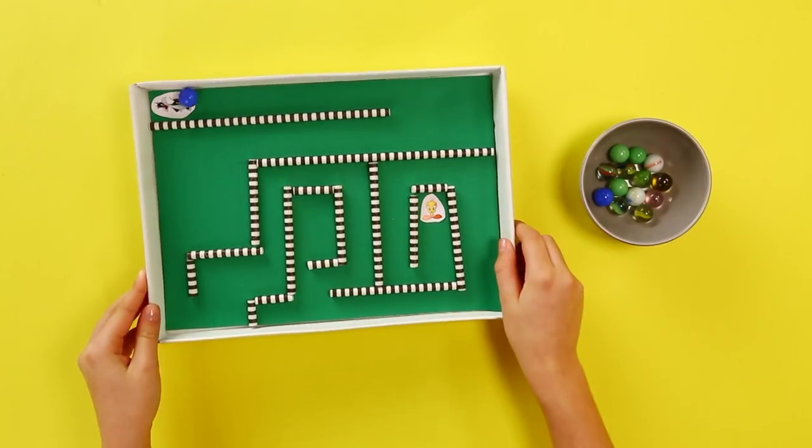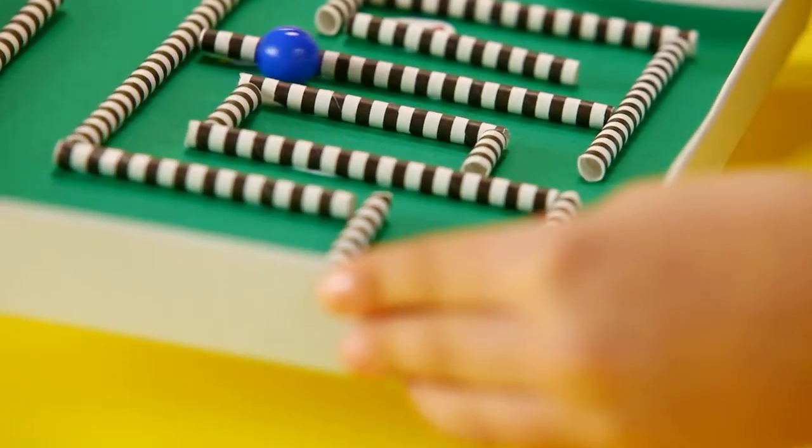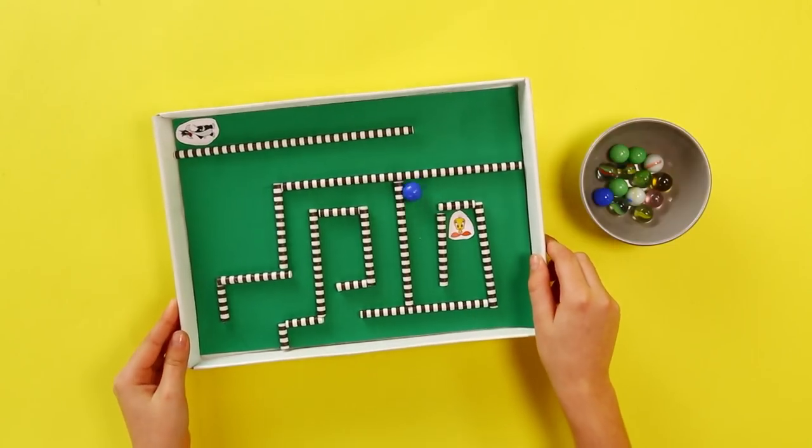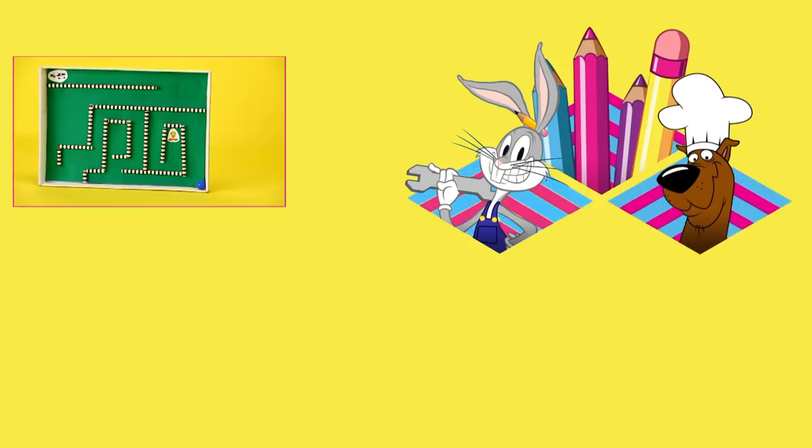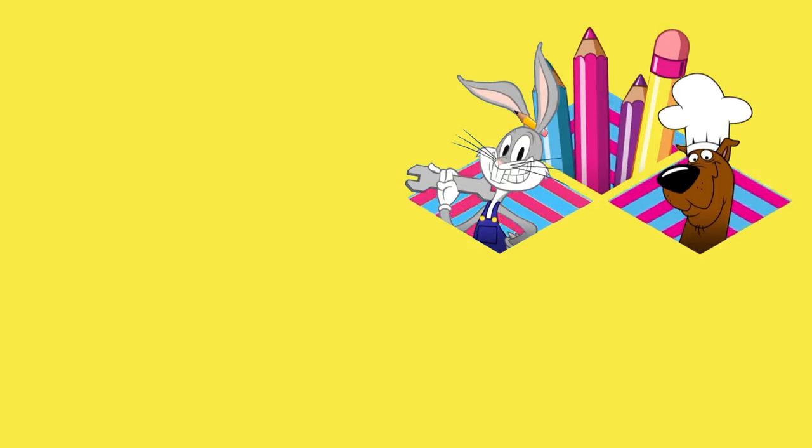Now you're ready to play. Using a marble, help Sylvester find his way back to Tweety by tilting the maze. Amazing! Find more tutorials like this at boomerangtv.co.uk.